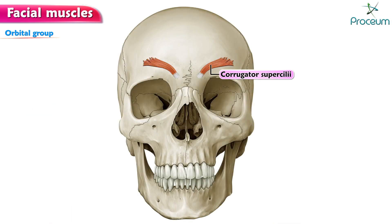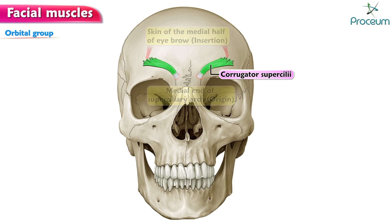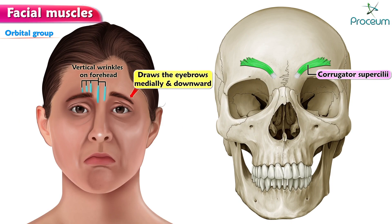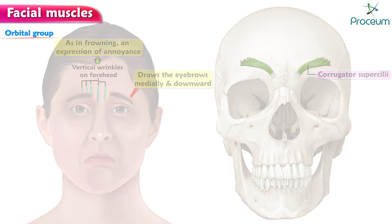Corrugator supercilii. Origin: medial end of the superciliary arch. Insertion: skin of the medial half of the eyebrow. Function: draws the eyebrows medially and downward, producing vertical wrinkles on the forehead, as in frowning and expression of annoyance.